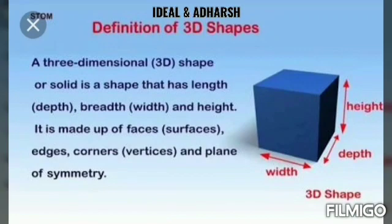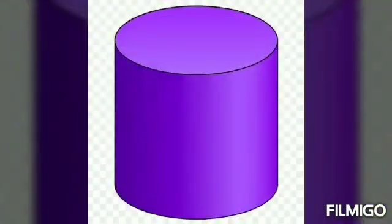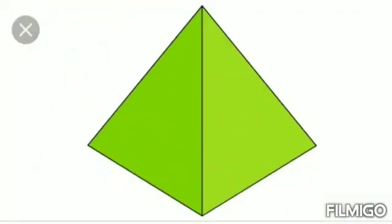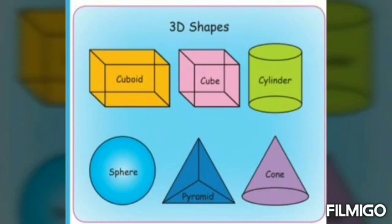This is known as three-dimensional shape or 3D shapes. Let's see some 3D shapes. Cube, cuboid, cylinder, sphere, pyramid and cone. These are all the 3D shapes.